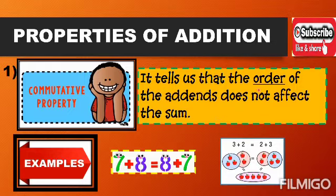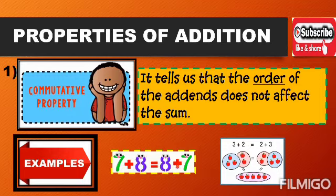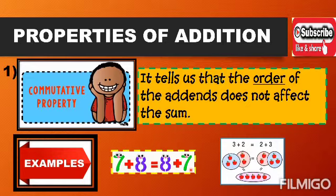Even if you change the order or the position of all the addends, it will not really affect the sum. For example, we have 7 and 8. The arrangement has 7 in the first place and 8 in the second. If you change the position — 8 plus 7 — the sum still does not change. 7 plus 8 equals 15, and 8 plus 7 also equals 15.